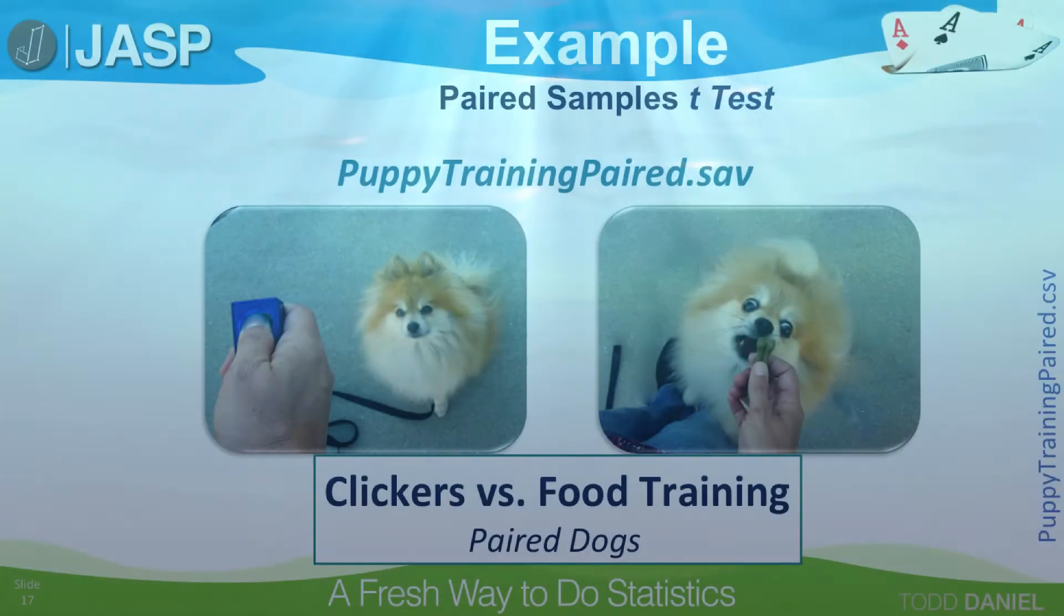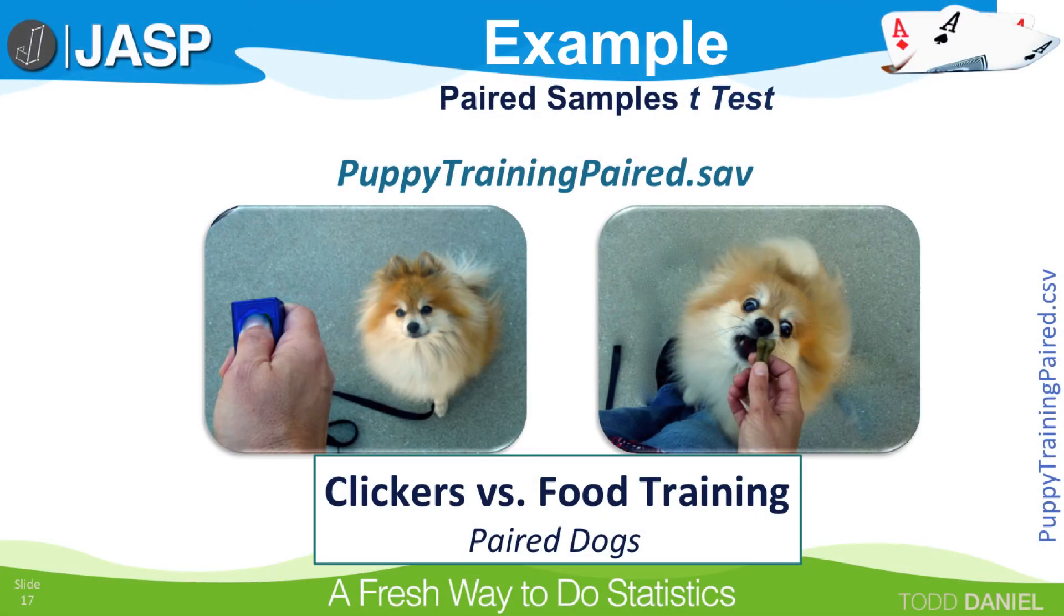So here is the setup for our research. There are two popular ways to train dogs. One involves using a clicker, which creates a sharp click that reinforces when the dog has done something right. The other method is food training, or treats, in which the dog gets a small morsel when he responds correctly.